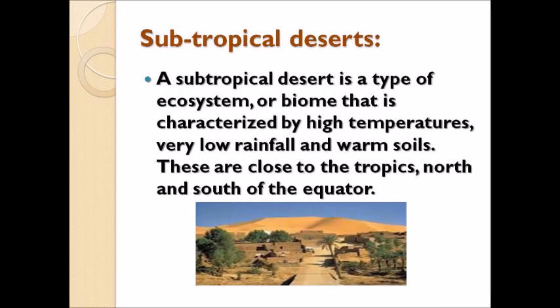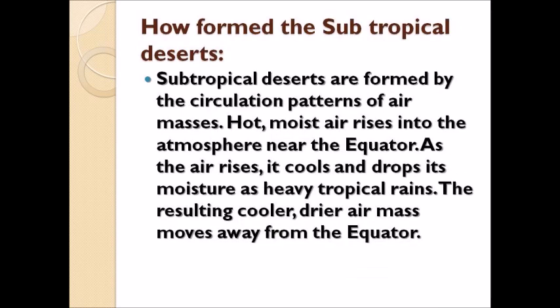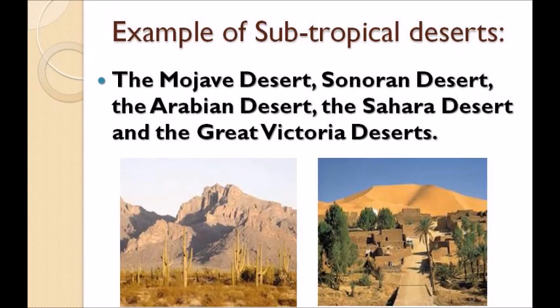A subtropical desert is a type of ecosystem or biome characterized by high temperatures, very low rainfall, and warm soil. These are close to the tropics, north and south of the equator. Subtropical deserts are formed by the circulation pattern of air masses — hot moist air rises near the equator, cools, and drops its moisture as heavy tropical rain. The cooler, drier air mass then moves away from the equator. Examples include the Mojave Desert, Sonoran Desert, Arabian Desert, Sahara Desert, and Great Victoria Desert.